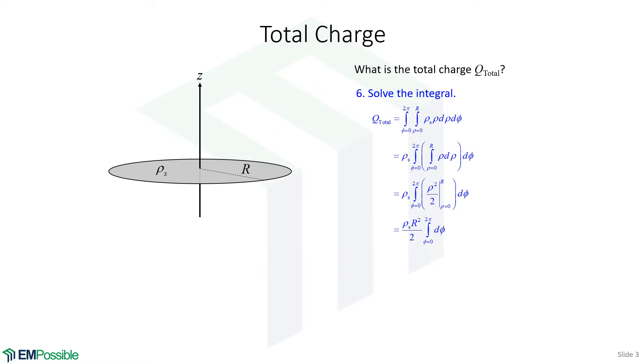We'll evaluate this at big R, and then subtract that same expression evaluated at zero. When we do that, we just get r squared, and we can bring that to the outside of the integral along with rho s and this factor of two. Now we're just left with an integral of phi from zero to two pi of just d phi. The anti-derivative of one is phi. We evaluate that from zero to two pi, we just get two pi. We can cancel our twos, and bring the pi over. Now we have an expression for total charge, pi r squared rho s.